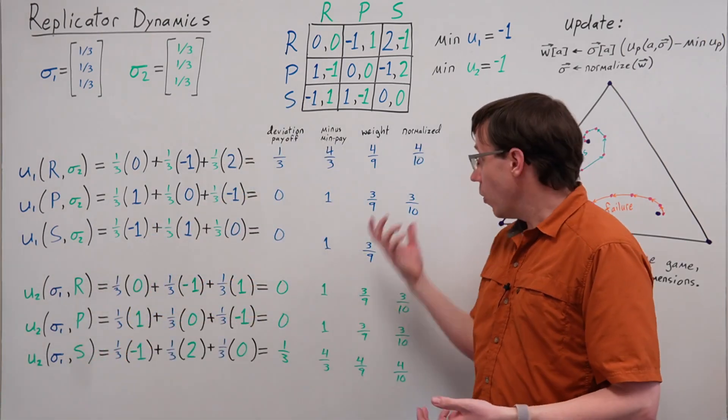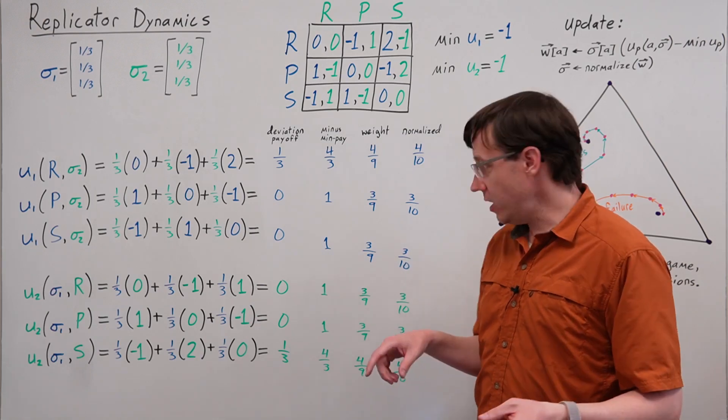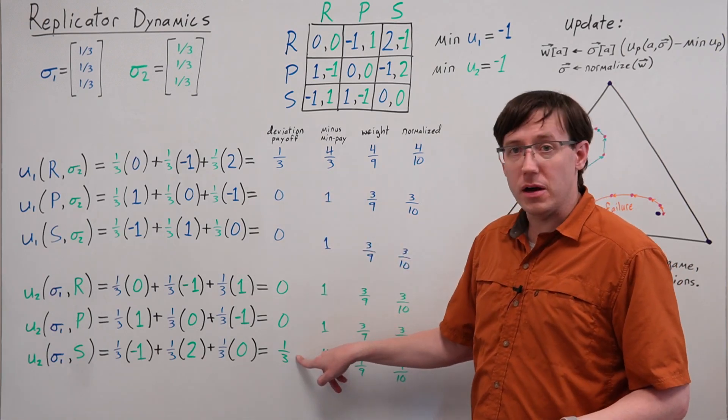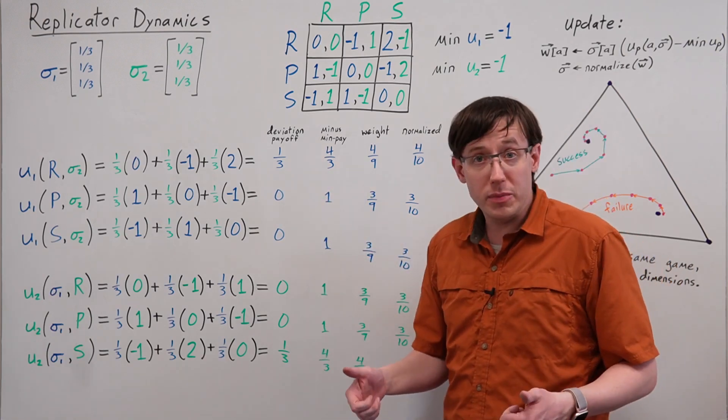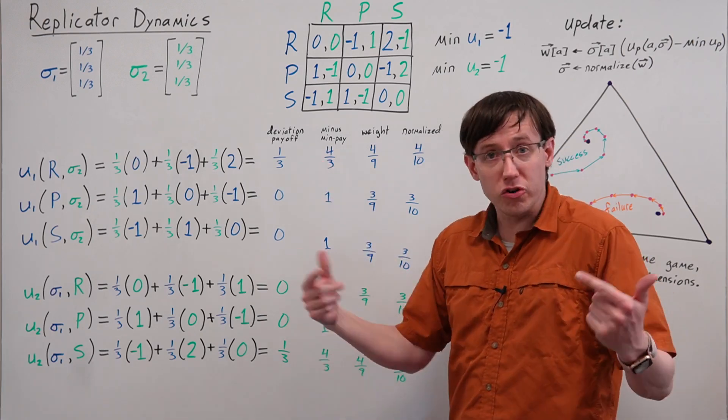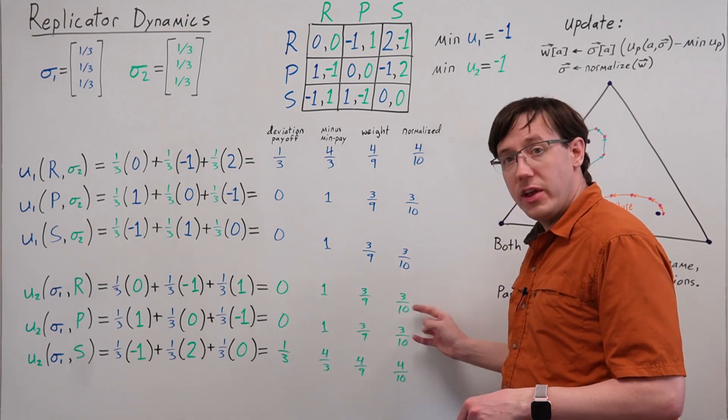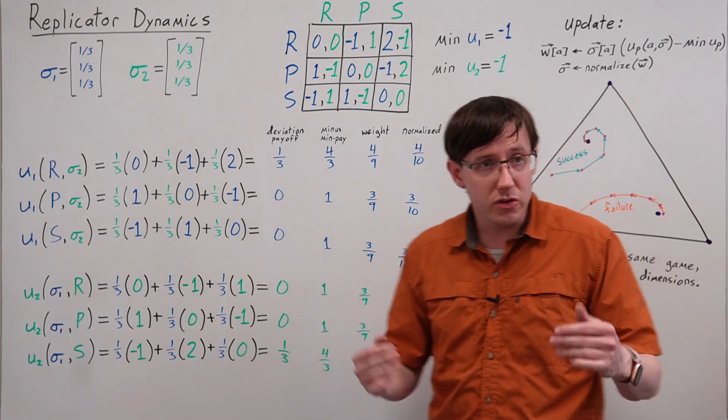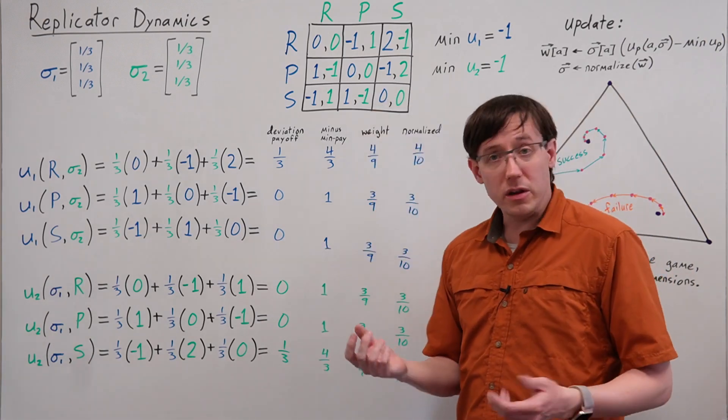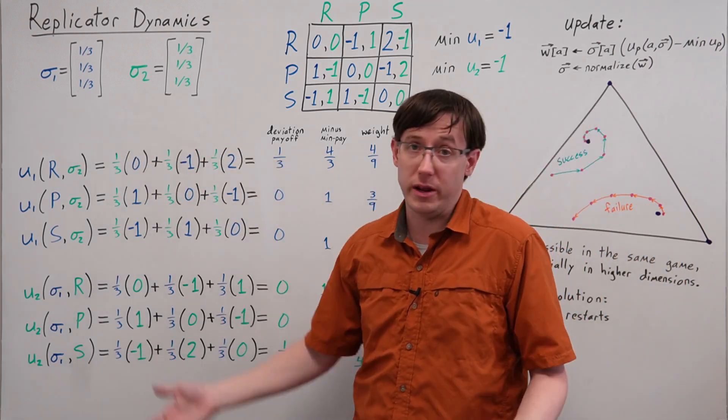We've now completed one iteration of replicator dynamics, and we see that the actions with the best deviation payoffs had their probabilities up-weighted since they got multiplied by larger values, and the actions with lower deviation payoffs had their probabilities decreased when we performed the normalization step. Now we can use these mixed strategies as the new profile for another iteration.